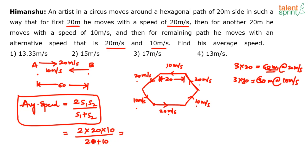So it's 200, 400, 400 by 30. 400 by 30 will be 13.33, 13.33 meters per second. Option one.